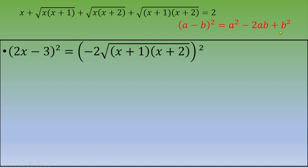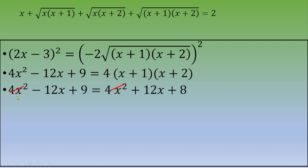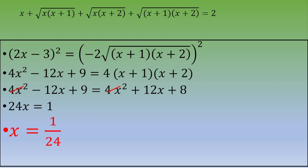Squaring the left side using (a−b)² gives 4x²−12x+9. The right side gives 4(x+1)(x+2) = 4x²+12x+8. Canceling 4x² from both sides, we get −12x+9 = 12x+8, so 24x = 1, and therefore x = 1/24. This is the final answer.